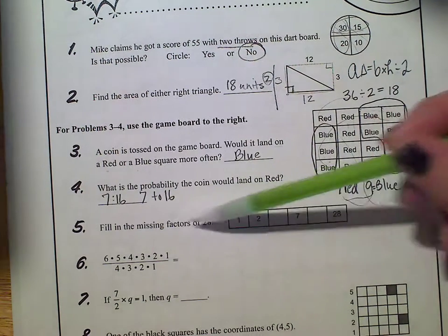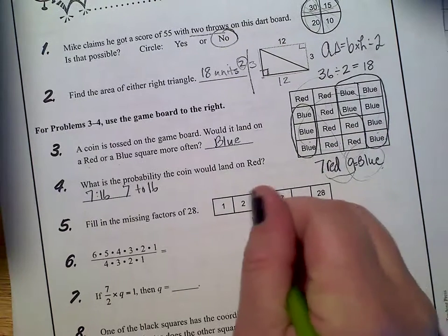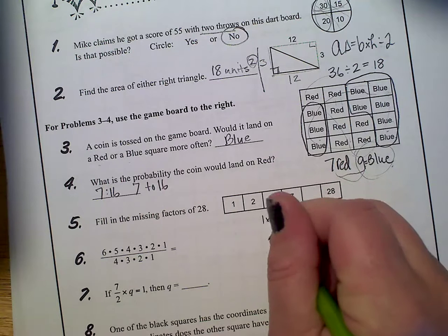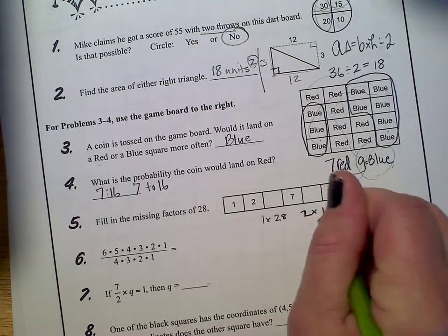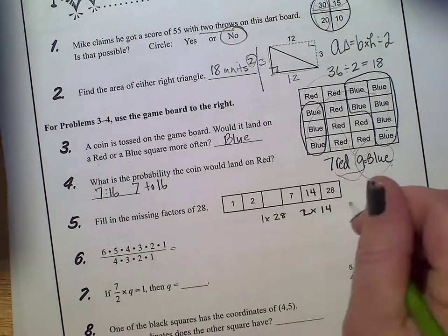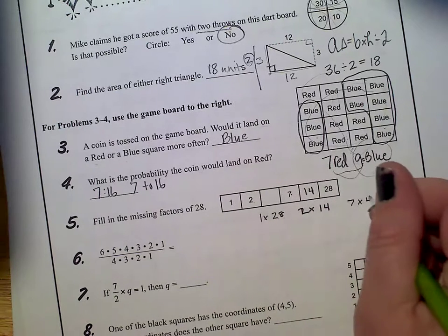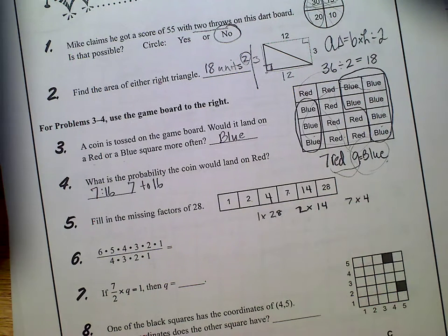Then it says, fill in the missing factors for 28. So 1 times 28, half of 28 is 14, so 2 times 14. So there's the 2, so I'm going to put the 14 over here and then 7 times 4 will get you to 28.